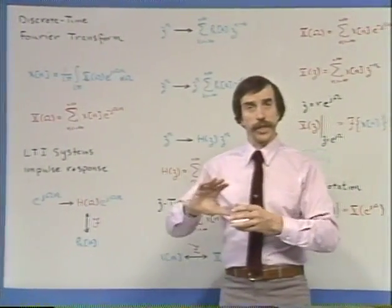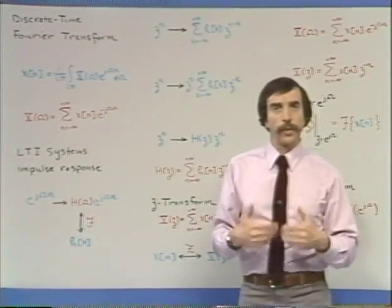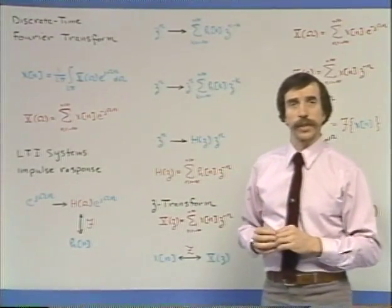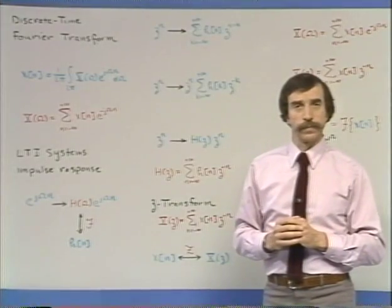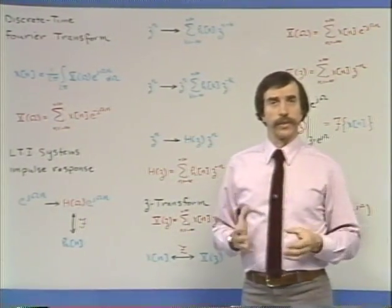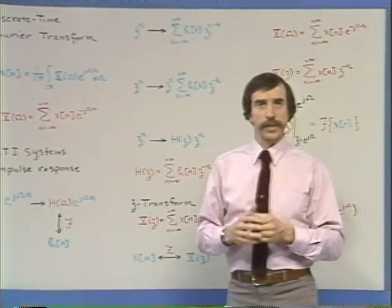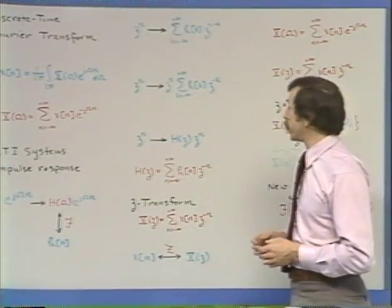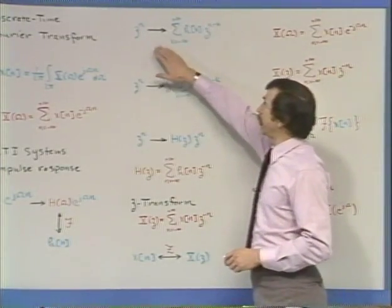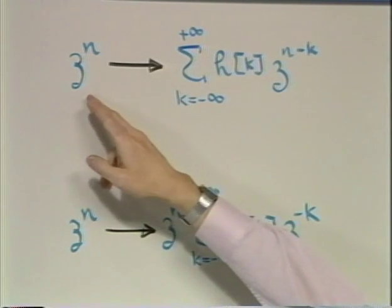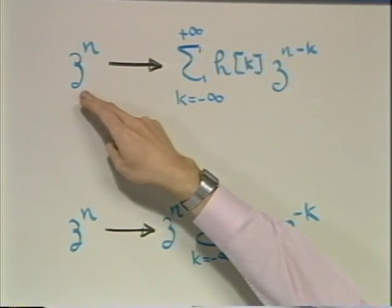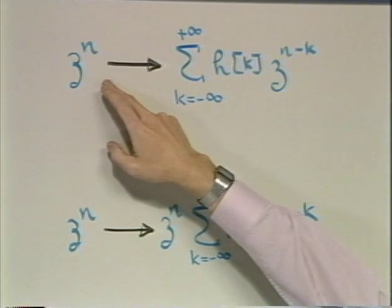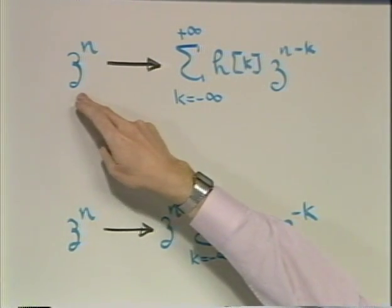That set of notions is more or less identical to the way we motivated the Laplace transform and the Fourier transform in the continuous time case. Just as in continuous time, there are a set of signals more general than the complex exponentials which are also eigenfunctions of linear time-invariant systems. In particular, in discrete time, if instead of an exponential e^{jωn} we had a more general complex number z, the signal z^n is also an eigenfunction of a linear time-invariant system for any particular z.